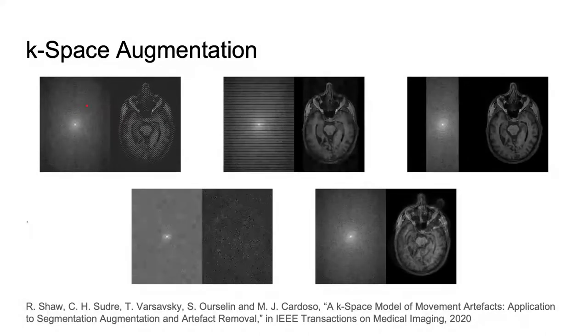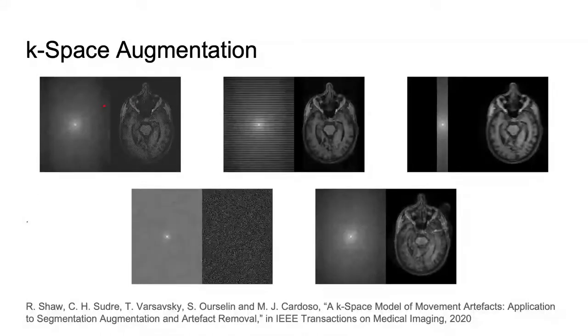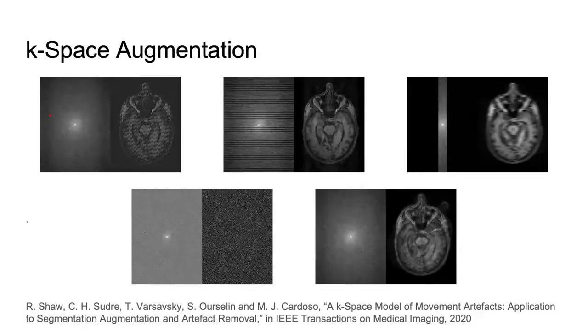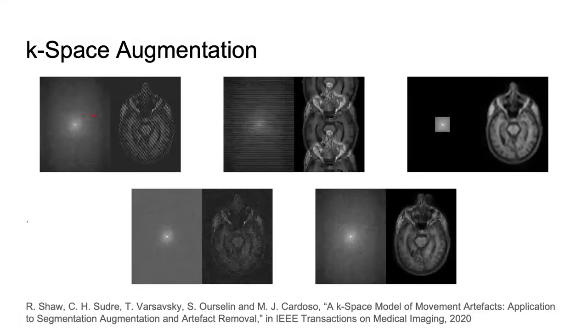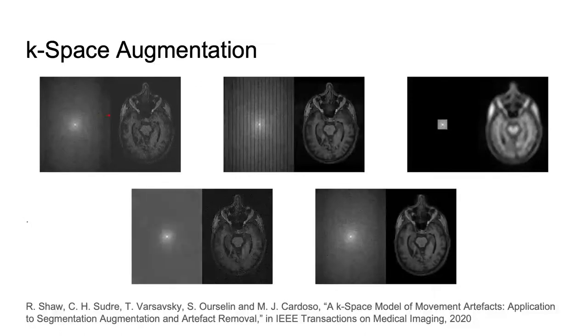Aliasing or wrap-around artifact occurs when the imaging field of view is smaller than the anatomy being imaged. We retrospectively simulate this by masking out k-space lines along a random axis that defines the wrap-around direction.